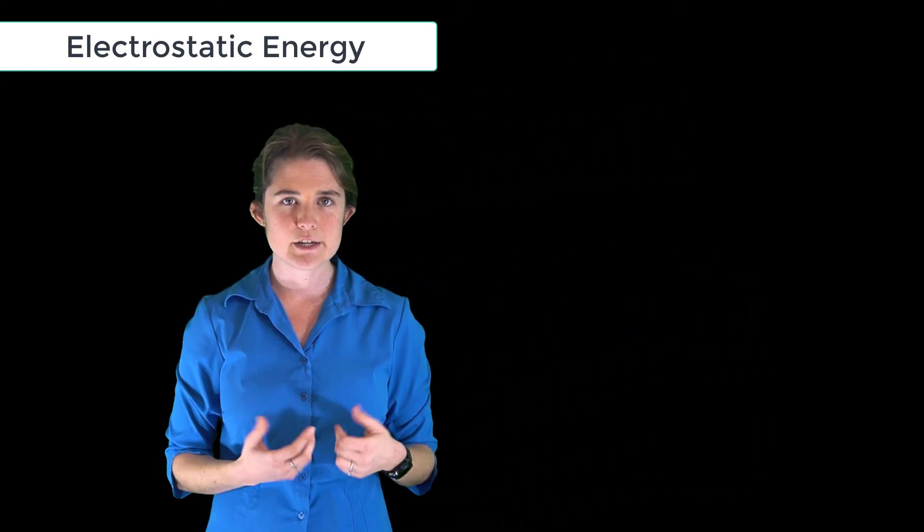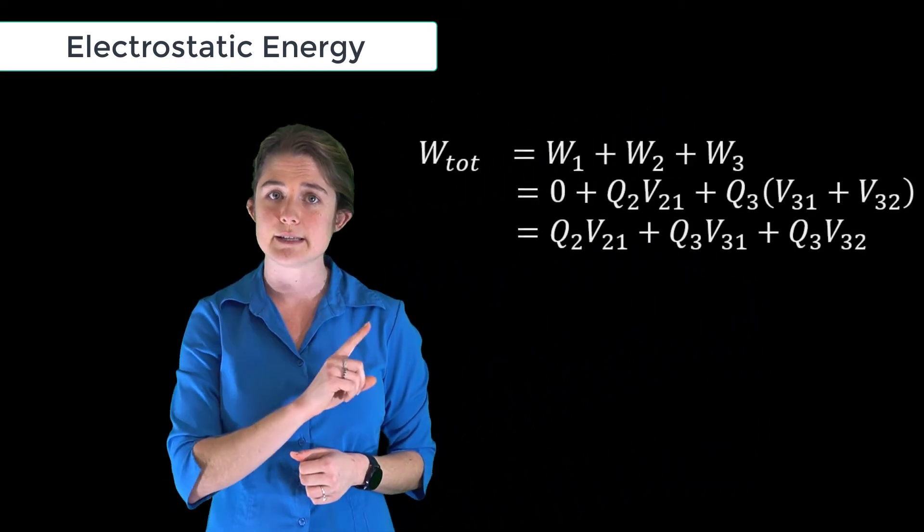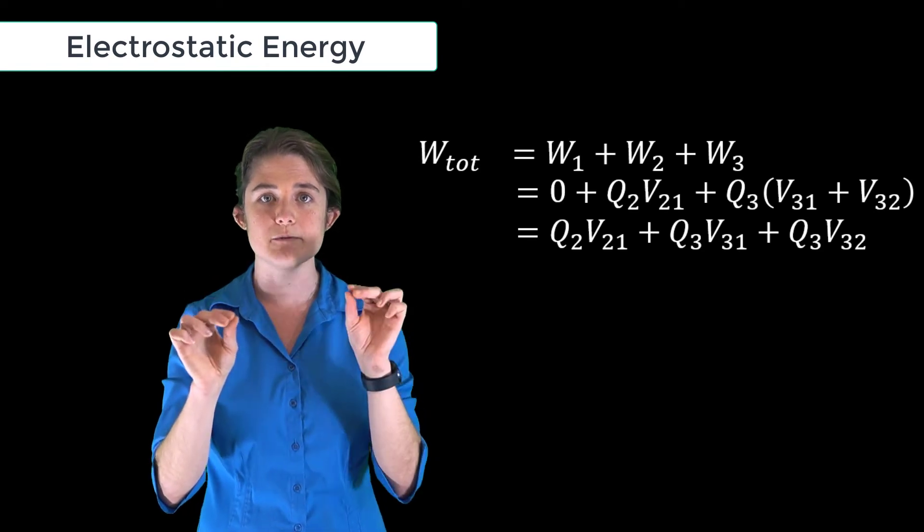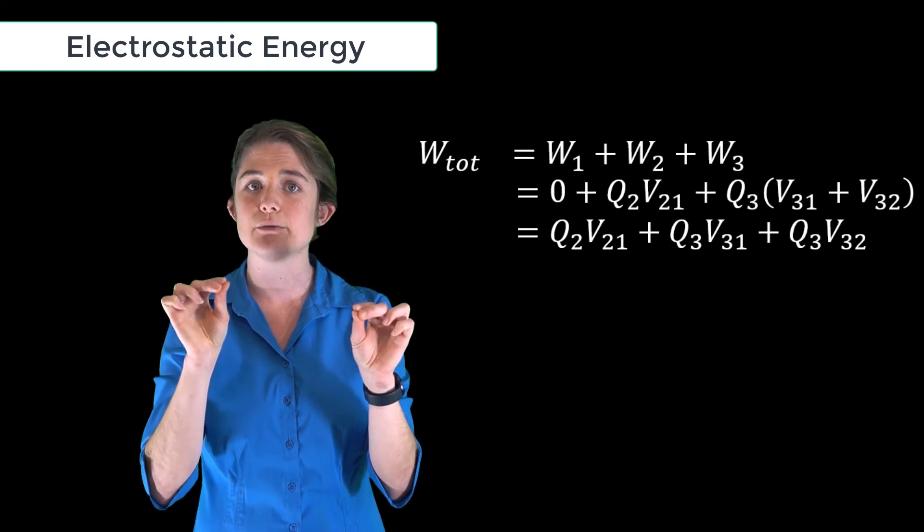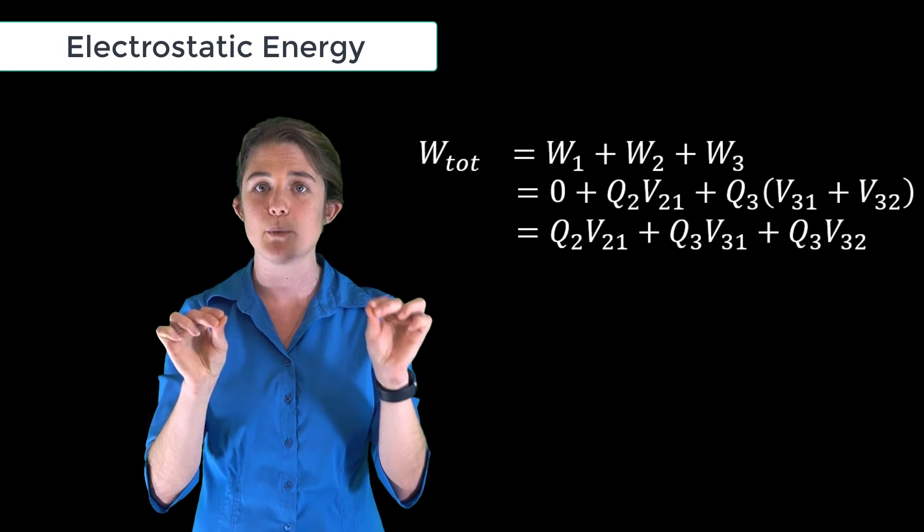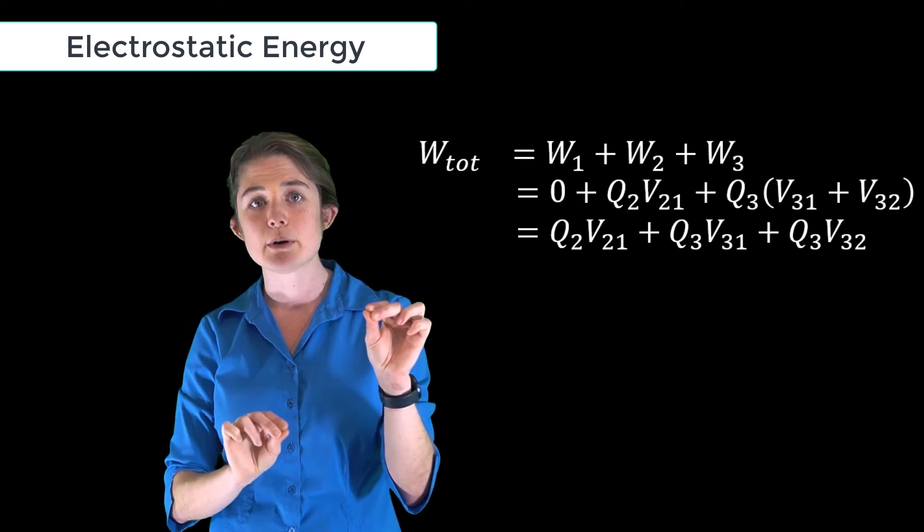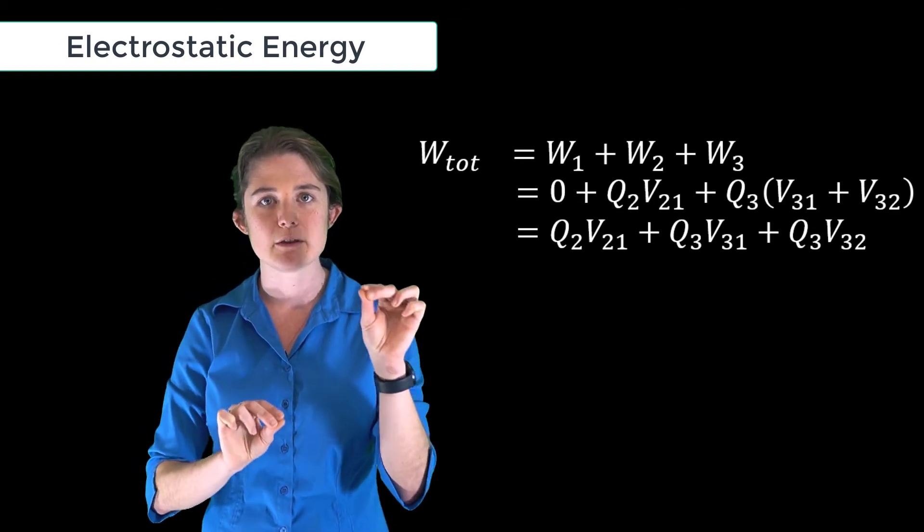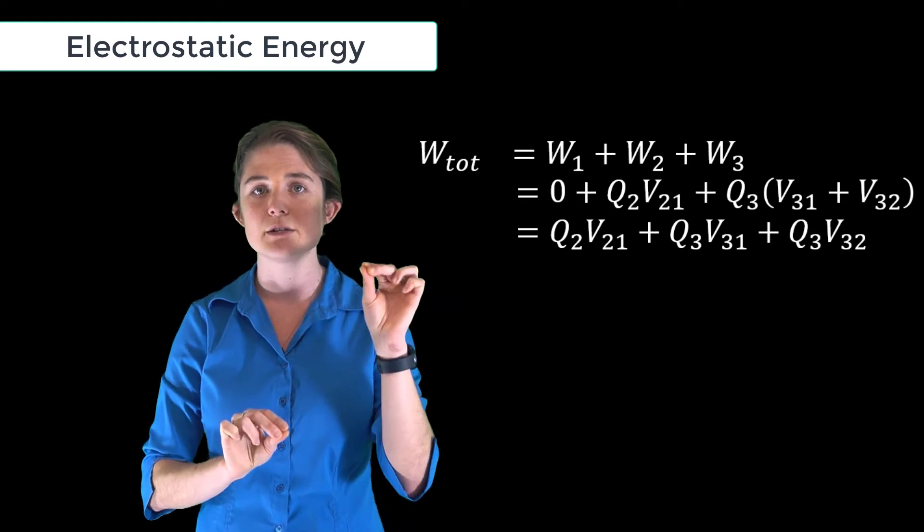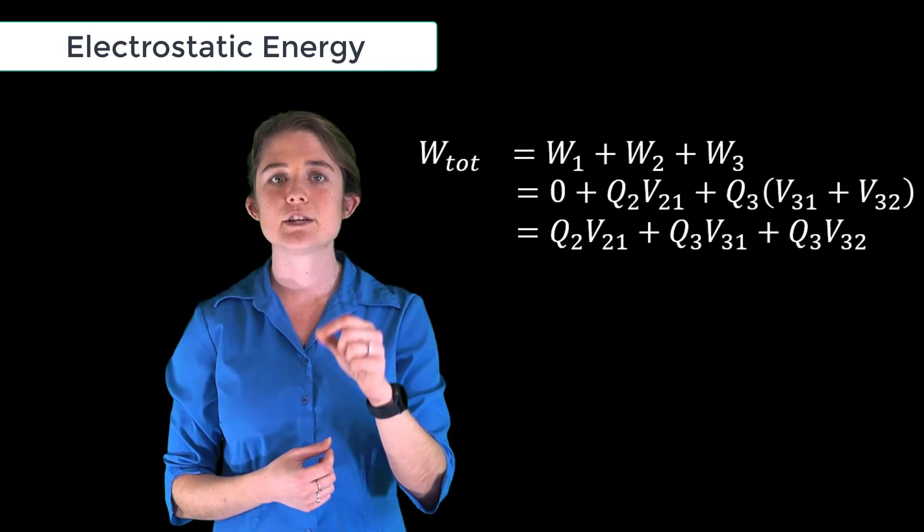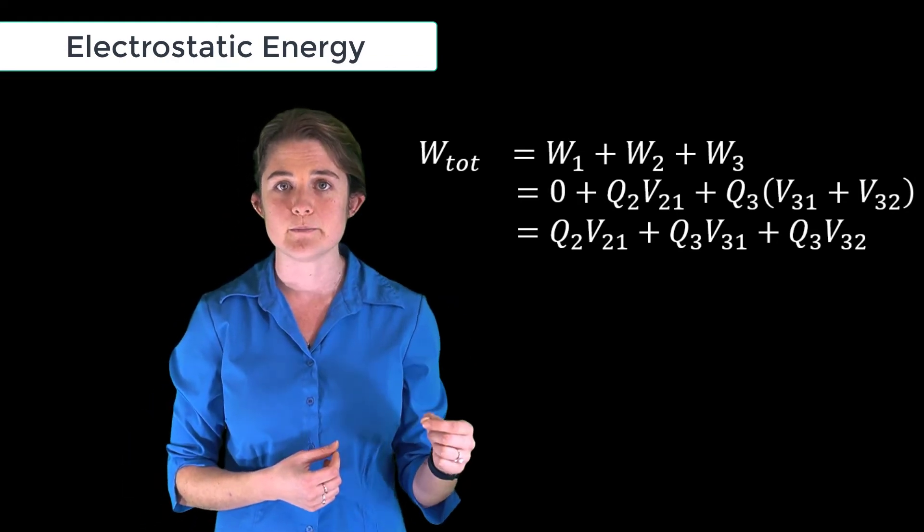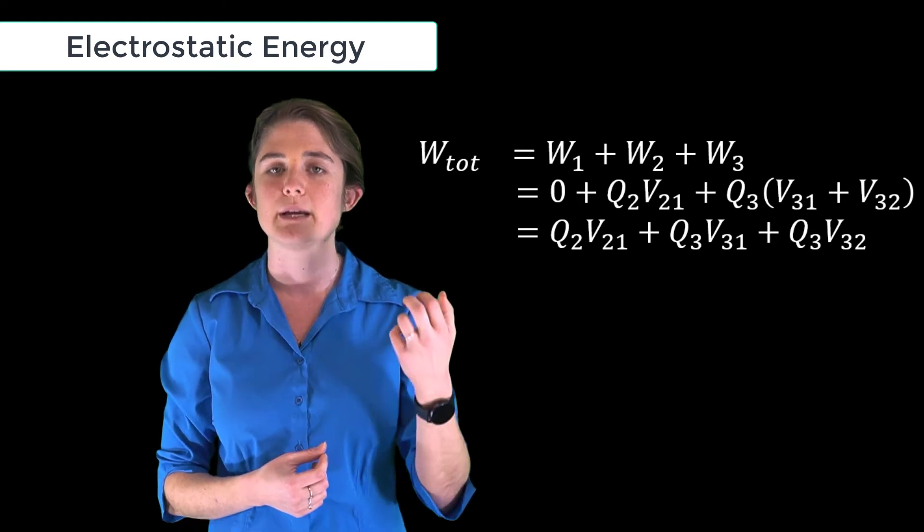For our three charge system, the total work is this: charge q2 times v21, the voltage q2 experiences due to q1, plus q3 times v31, the voltage q3 experiences due to q1, plus q3 times v32, the voltage q3 experiences because of q2.